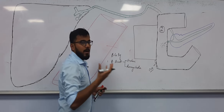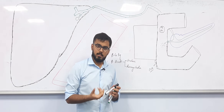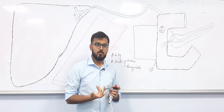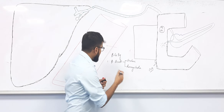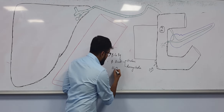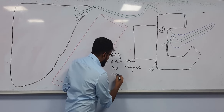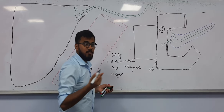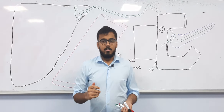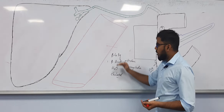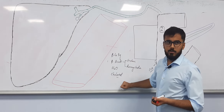Bile is a liquid, so it also contains water. Bile also contains cholesterol — that is why we sometimes get gallstones. And bile also contains phospholipids. So these are the components of bile.